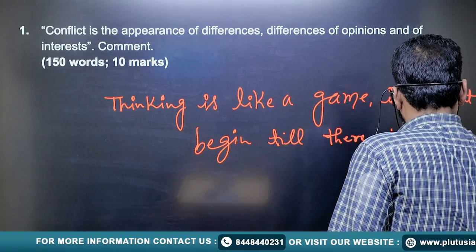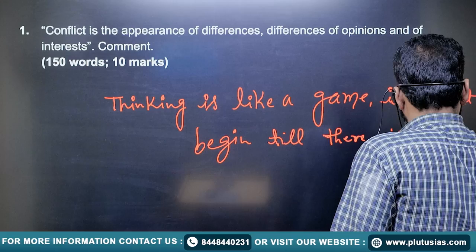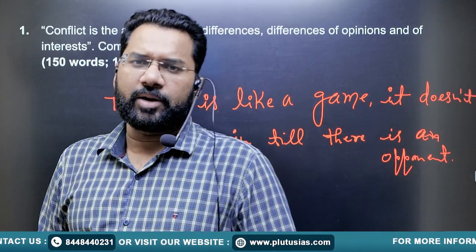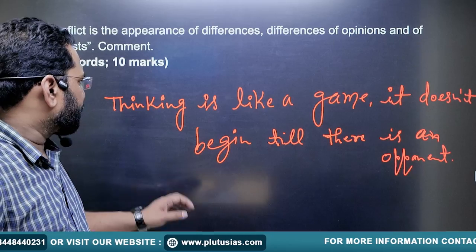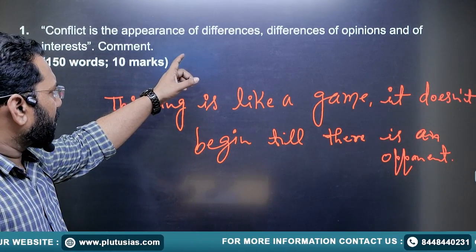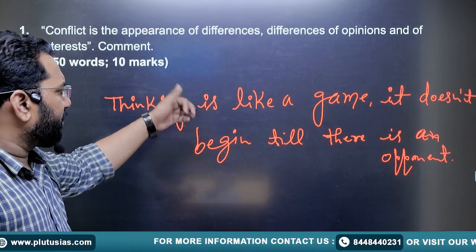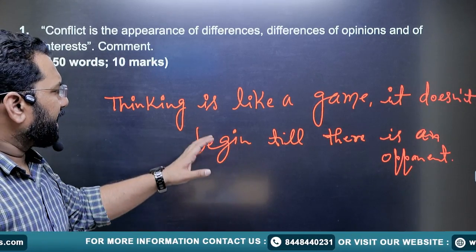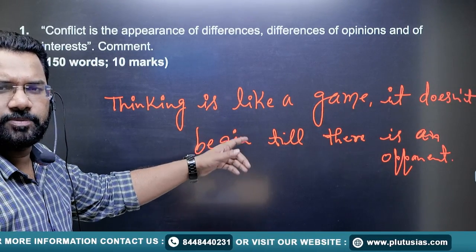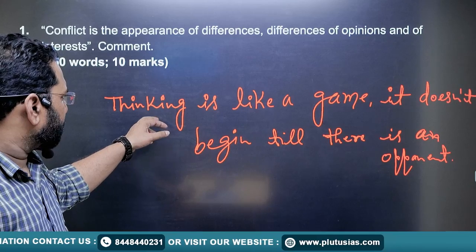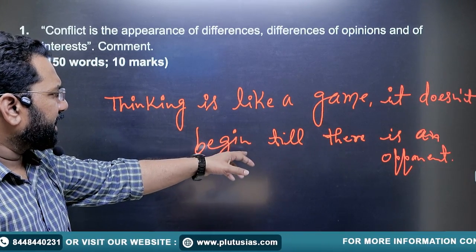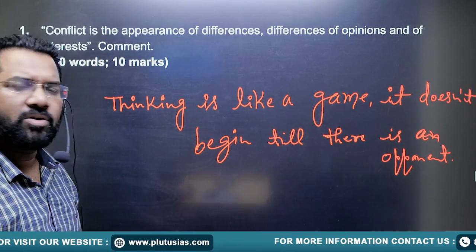It is not directly related to this question, but I want you to think on these lines. Since I've been repeatedly highlighting that conflicts are appearances of differences and difference of opinion and of interest, and these are socially valuable differences as per Follett — here you can also see: thinking is like a game, it does not begin till there is an opponent.